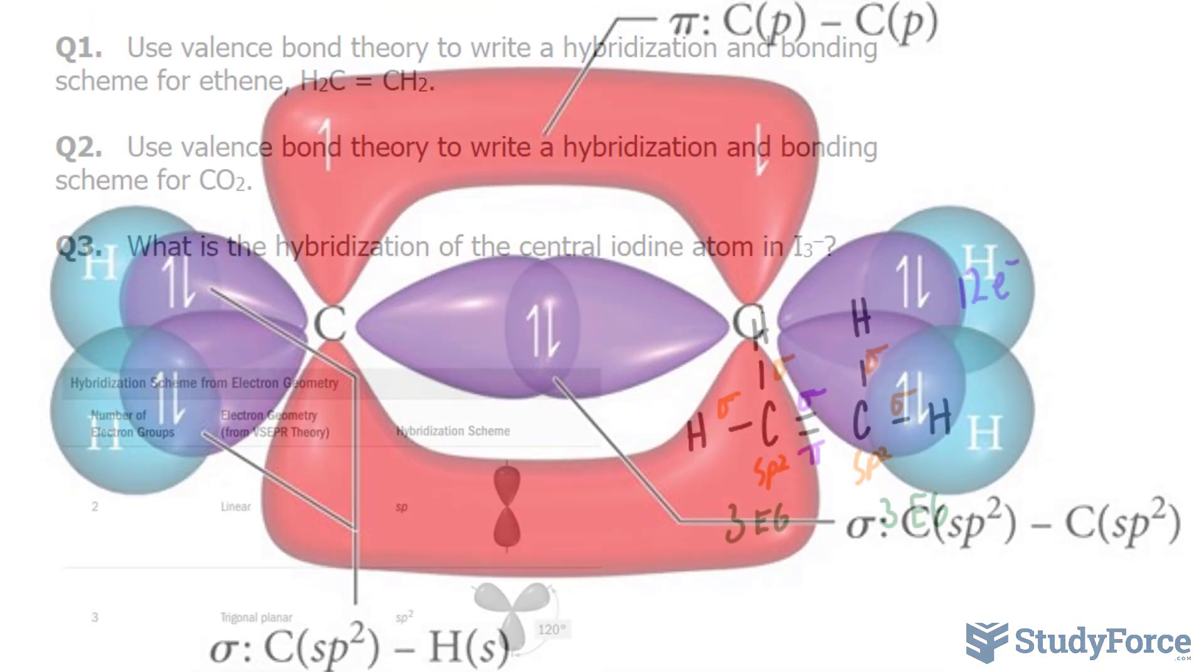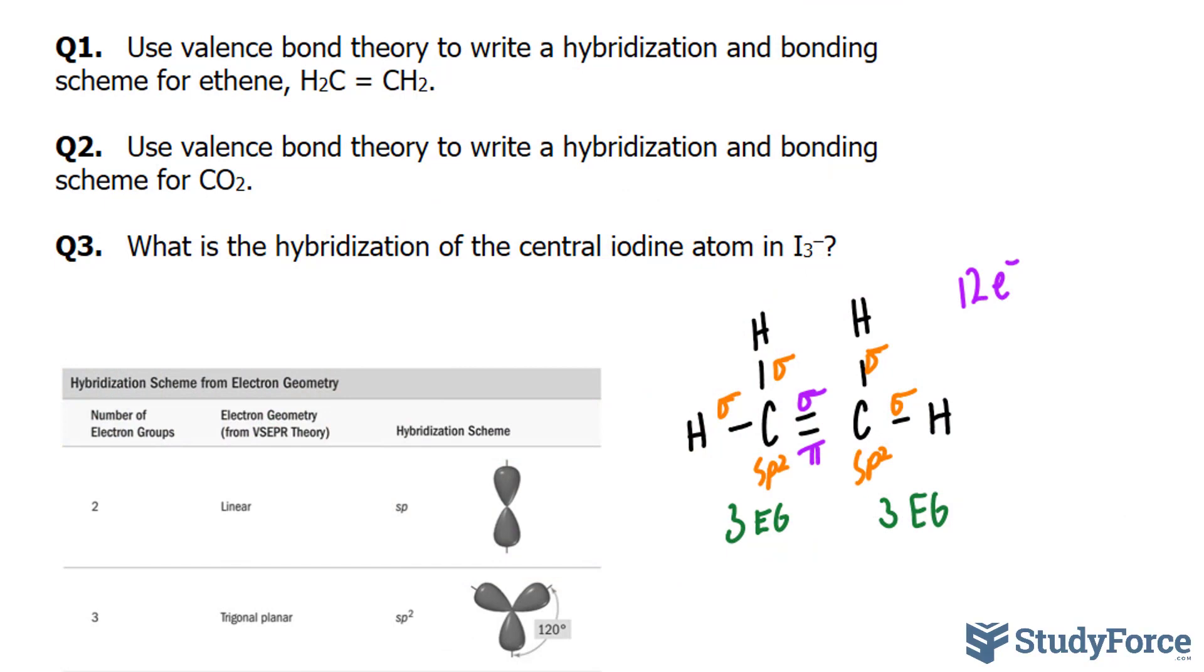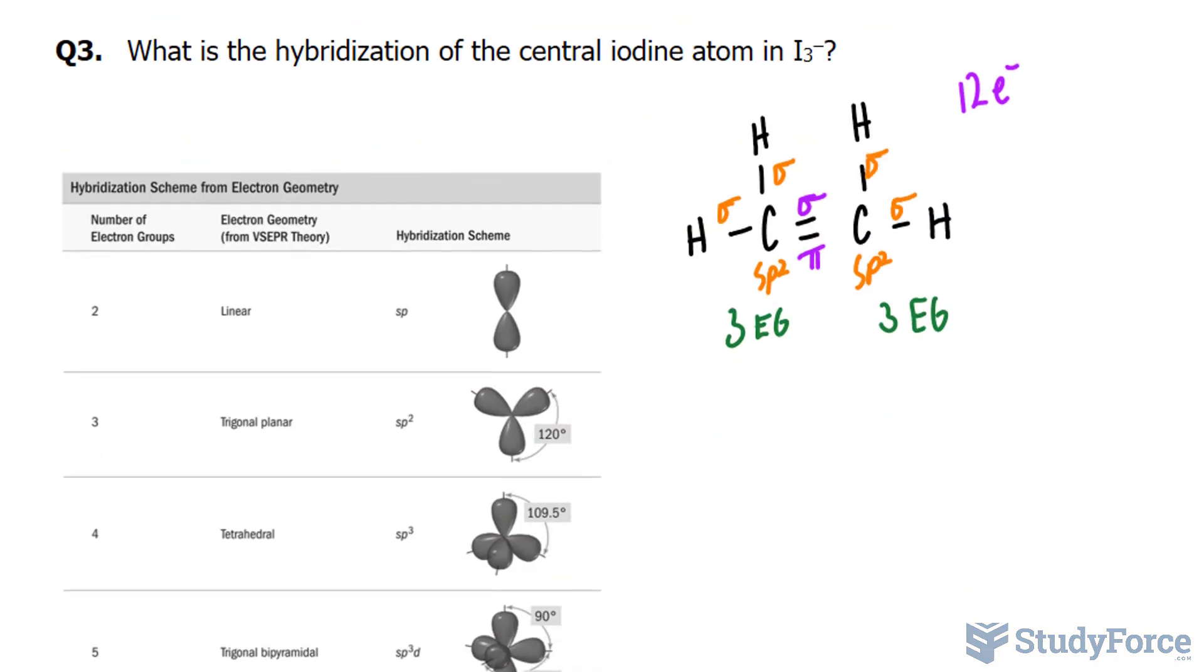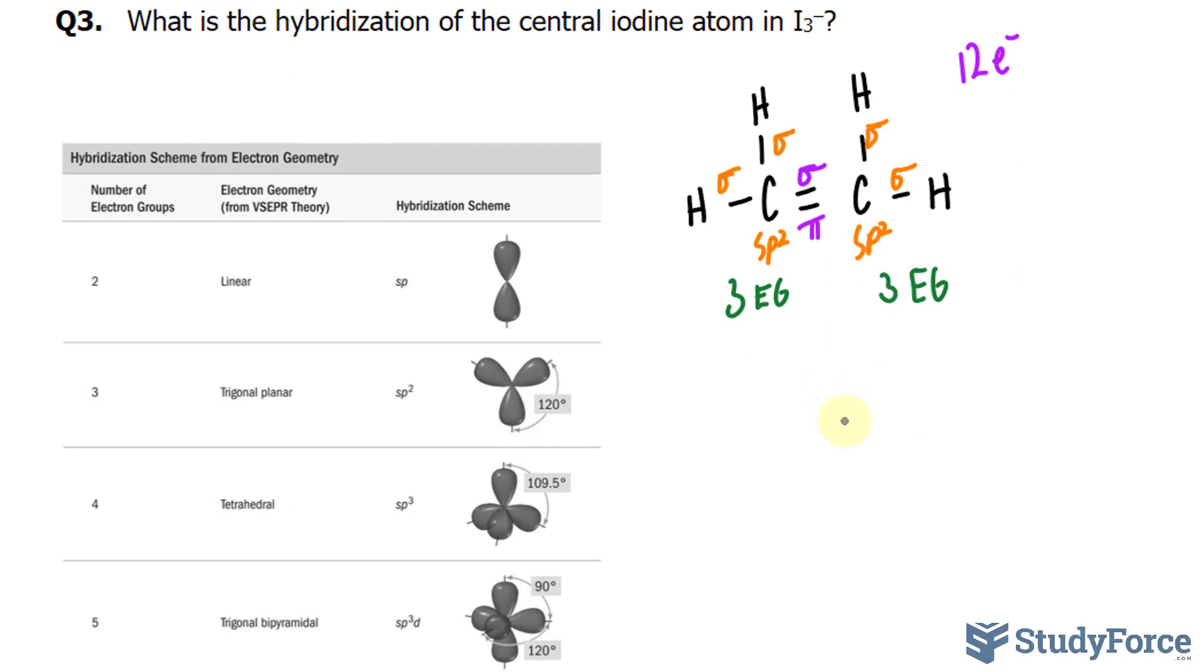In question number two, we have to use the same valence bond theory to write a hybridization, this time for carbon dioxide. Let's begin with a quick Lewis structure. So we have carbon as the central atom, single bonded to an oxygen, and another oxygen. Oxygen has six valence electrons, six times two is twelve, plus four of this carbon, that makes sixteen. We've already used up four, and therefore we have twelve more.